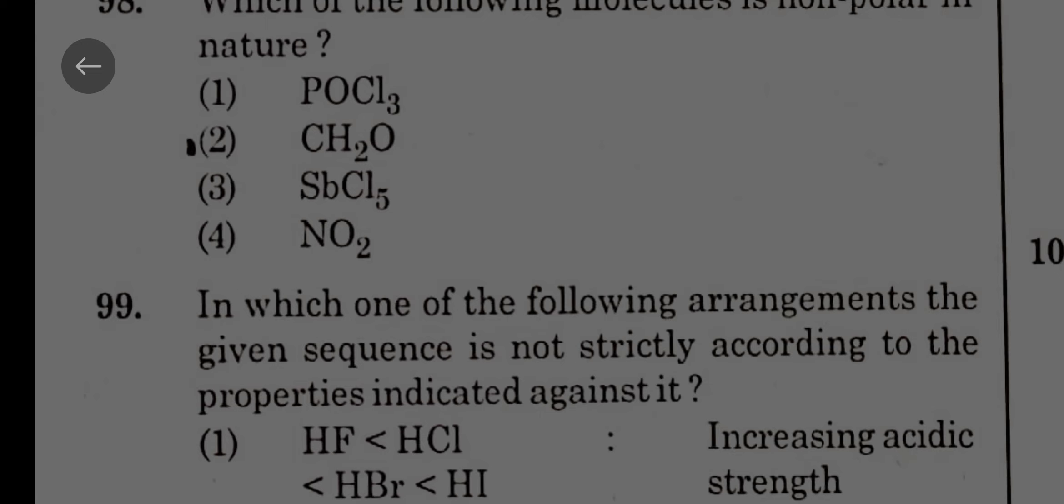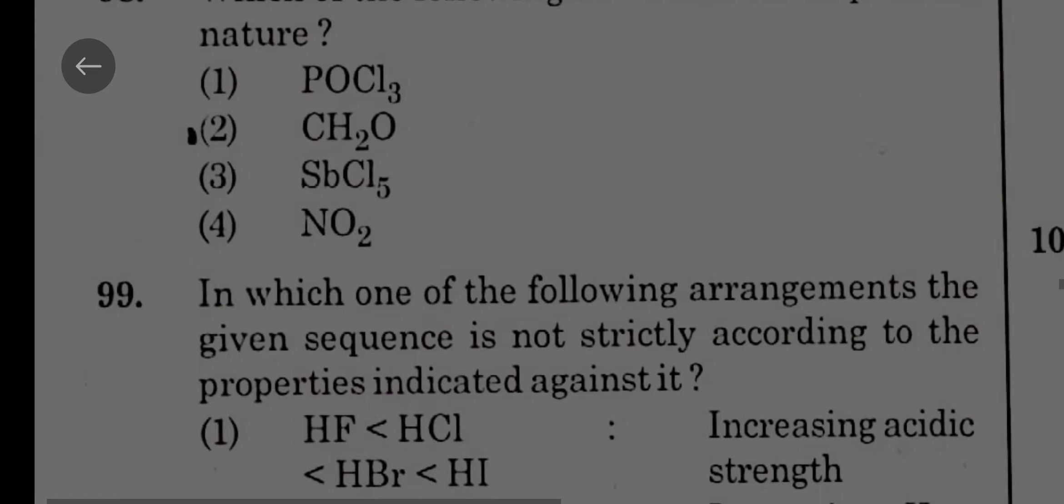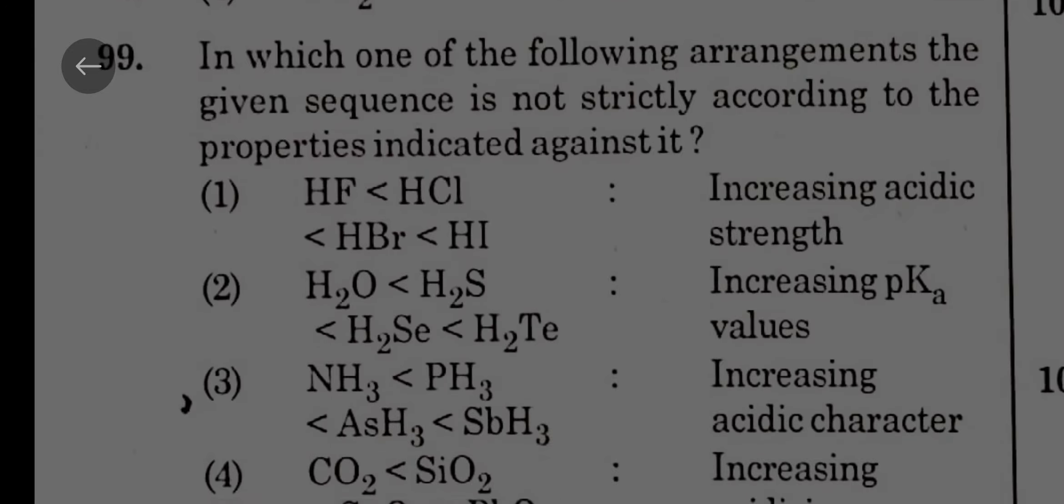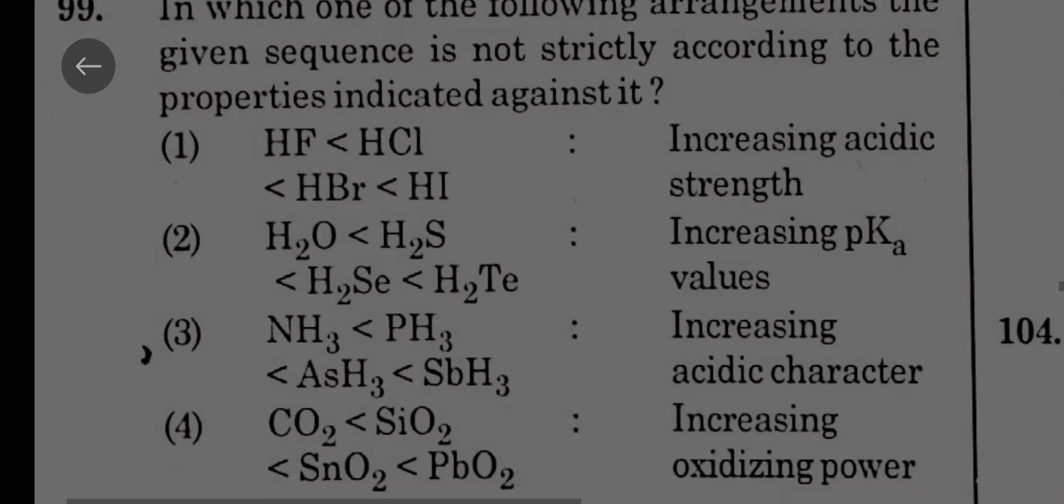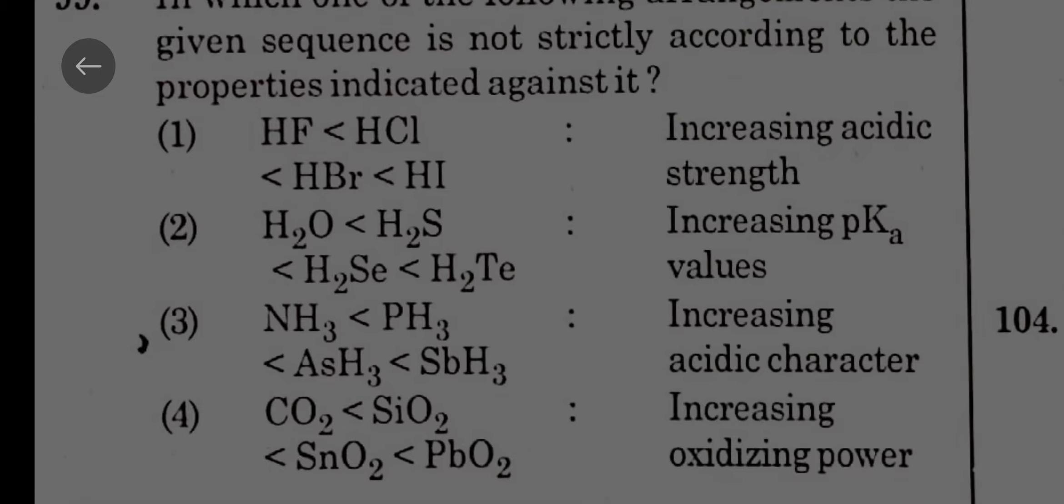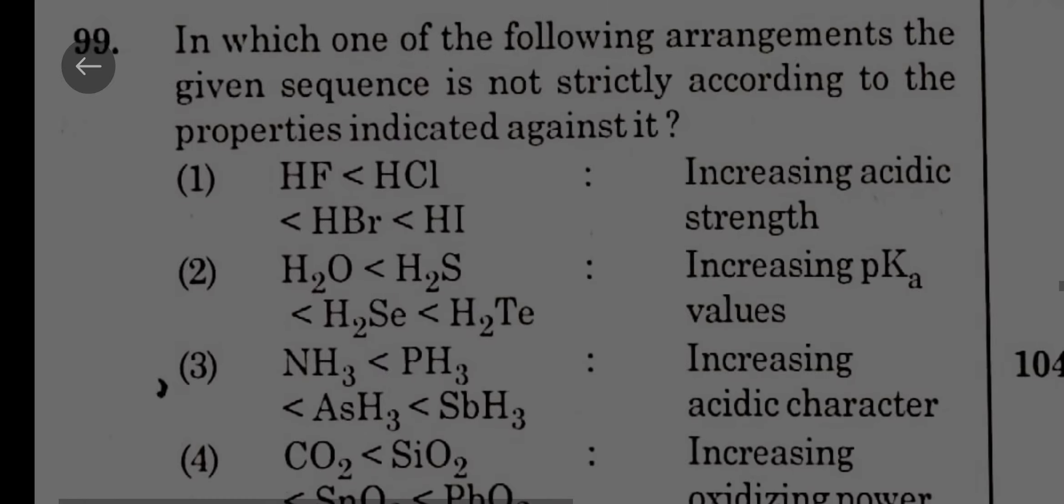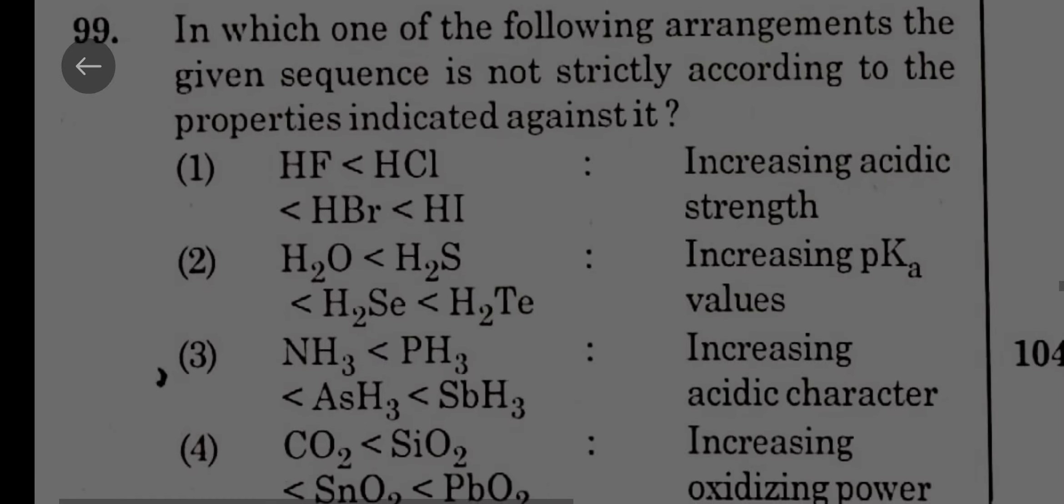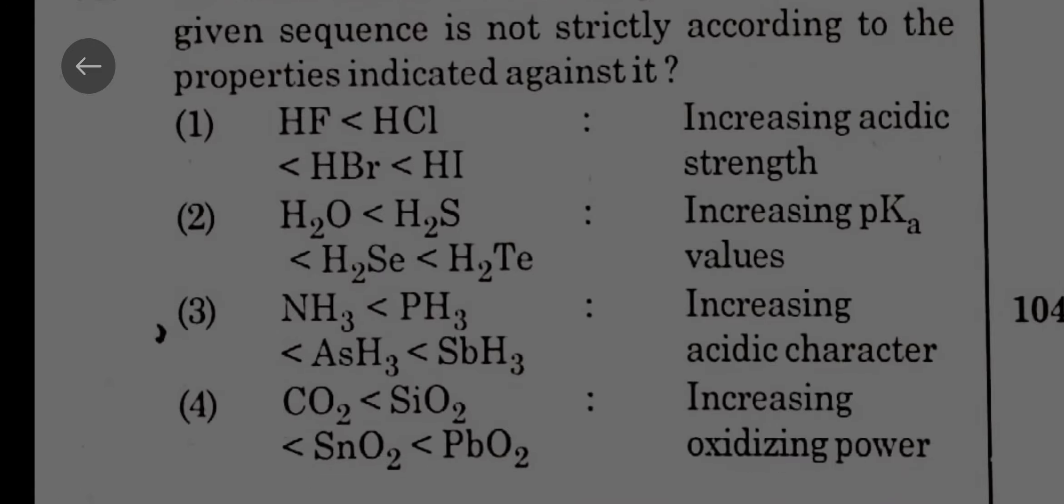H2O to H2S to H2Se to H2Te, the acidic nature will be increasing. So Ka increases, pKa decreases. So option 2 is incorrect statement. Sequence is not strictly, not strictly means incorrect. Incorrect is second option.